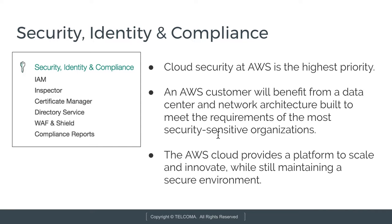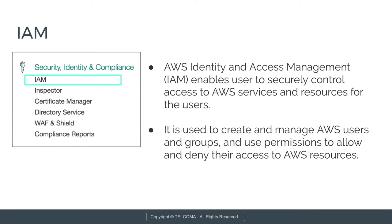The very first service is IAM, which is Identity and Access Management. With the help of IAM we can securely control access to AWS services and resources for users. Using IAM we can create and manage AWS users and groups, and we can use various permissions to allow or deny their access to various resources and services.